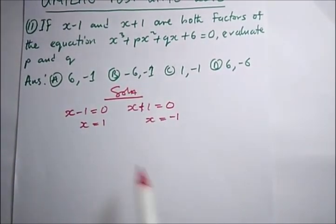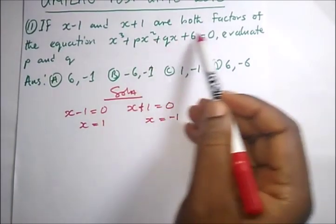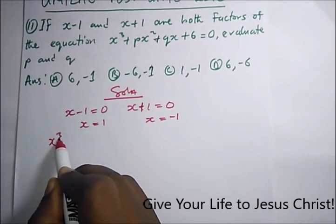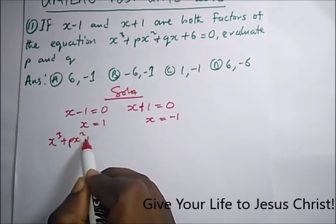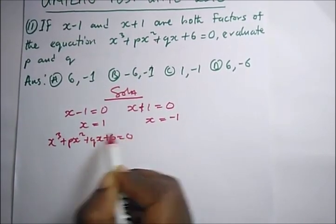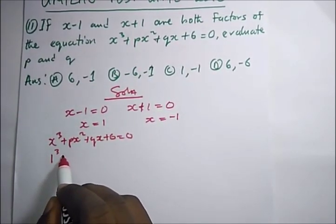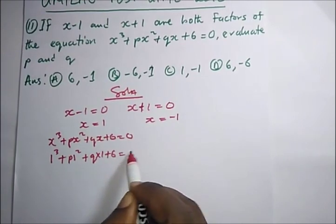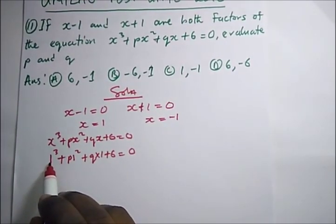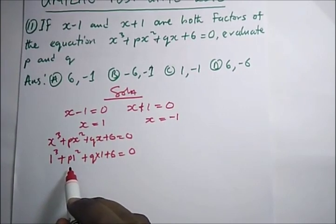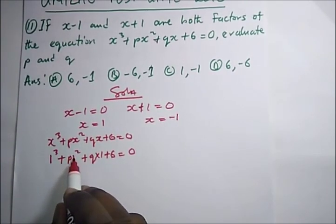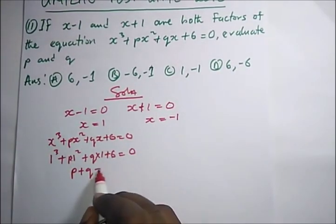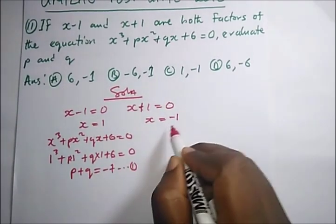For x equal to one, we substitute into the equation: x³ + Px² + Qx + 6 = 0. This gives 1³ + P(1²) + Q(1) + 6 = 0, which simplifies to 1 + P + Q + 6 = 0. So P + Q = −7. This is equation one.